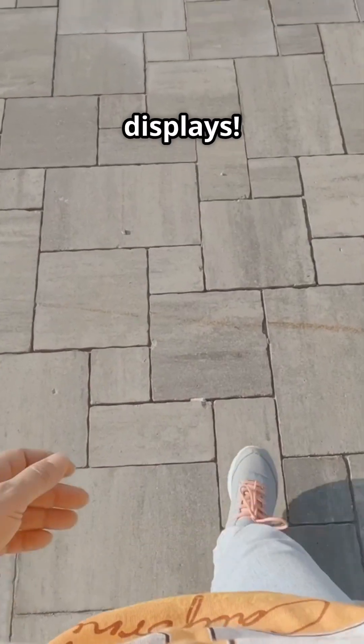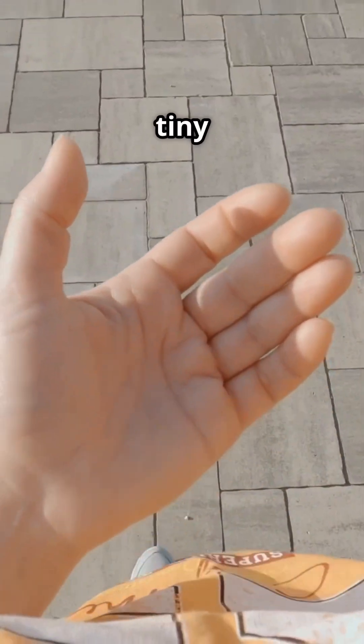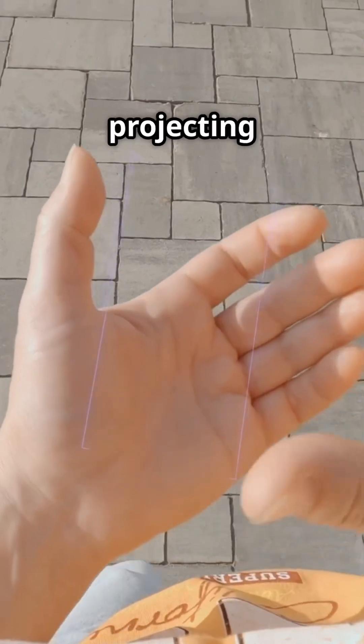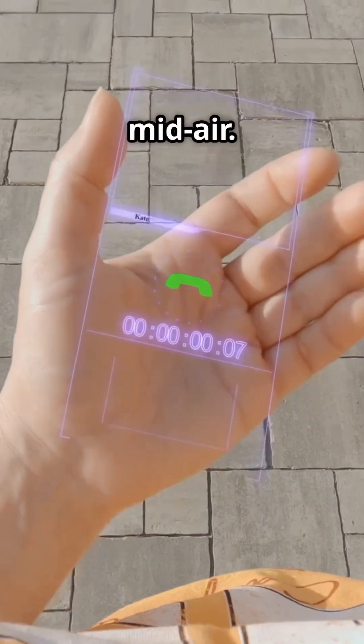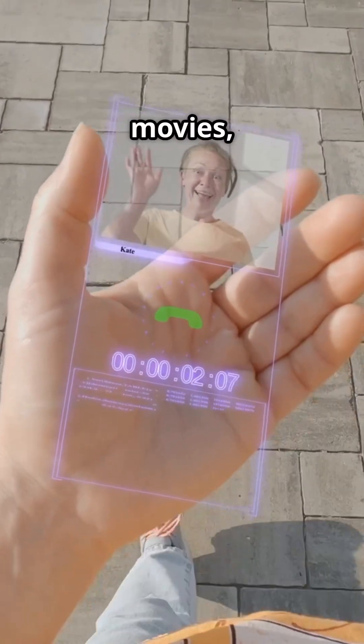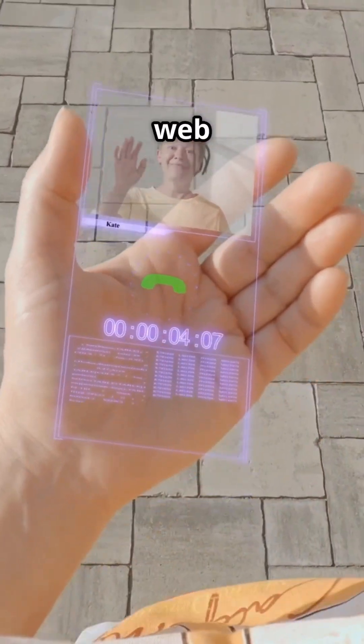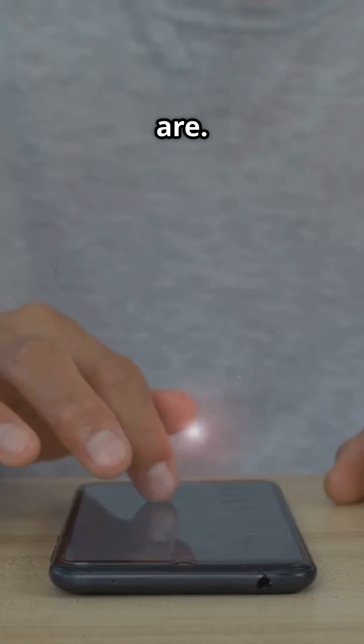First up, holographic displays. Forget staring at a tiny screen. Imagine your phone projecting a vibrant, interactive 3D hologram right in front of you floating in mid-air. You'll be able to watch movies, play games, and even browse the web on a display that's as big as you want, wherever you are.